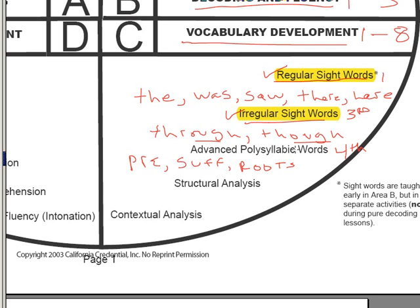Upper elementary words that are of the advanced polysyllabic word variety are going to have prefixes, suffixes, and roots in them that may be complex, and you need to know some activities that go along with them.